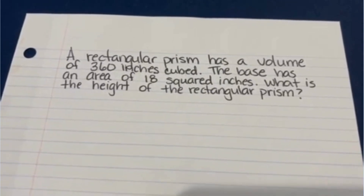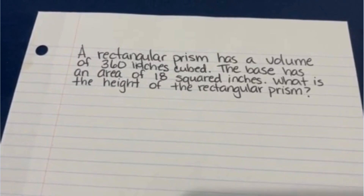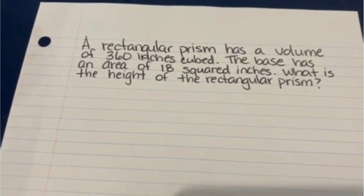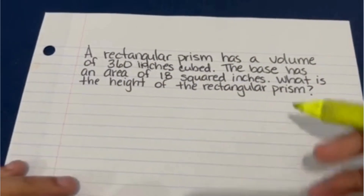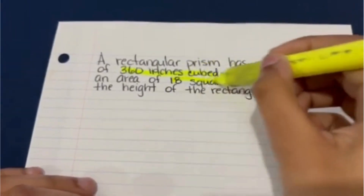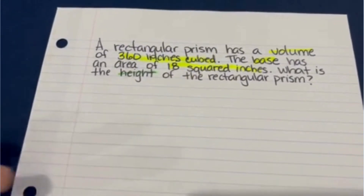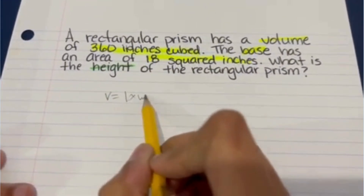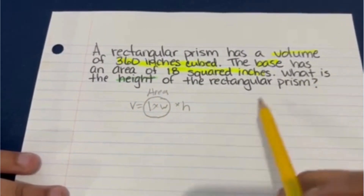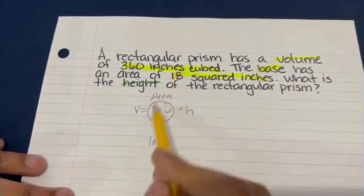Okay, mathematicians, we've got to pay special attention to the wording of this word problem. A rectangular prism has a volume of 360 inches cubed. The base has an area of 18 square inches. What is the height of the rectangular prism? This time, we are already given the volume, which is 360 inches cubed, and we know the base area, which is 18 square inches. This time, we're looking for the height.